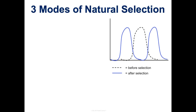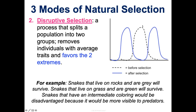Another mode is disruptive selection, where we actually favor the two extremes and not the average trait. For example with snakes: some live on rocks and are gray, some live in the grass and are green. But snakes with intermediate gray-and-green coloring don't blend into either the grass or the rocks — they're disadvantaged and get selected out. Over time we'd see gray snakes and green snakes but not really any combination of the two.